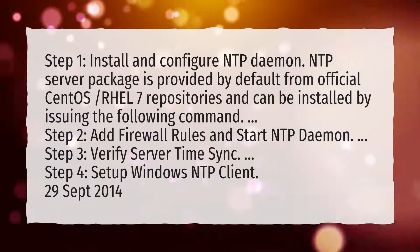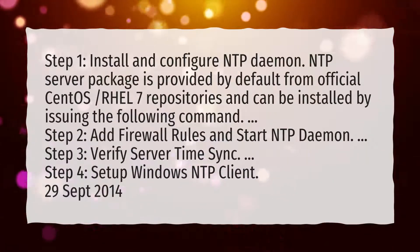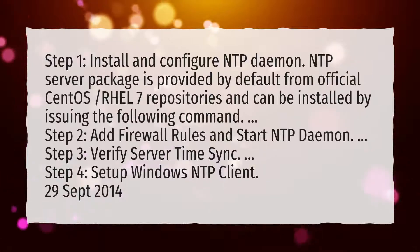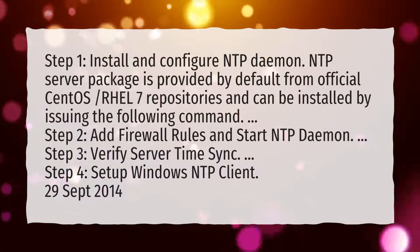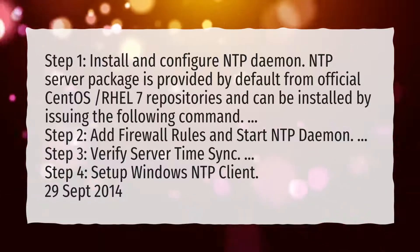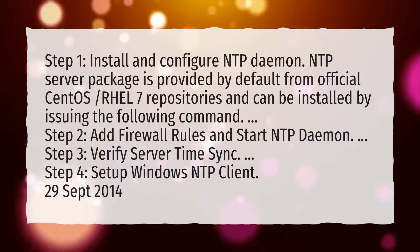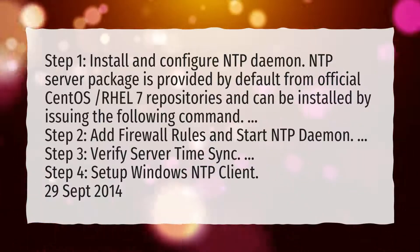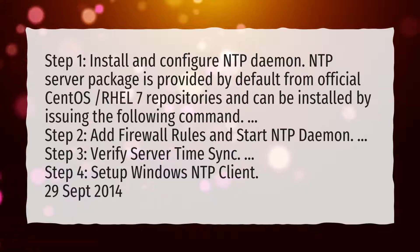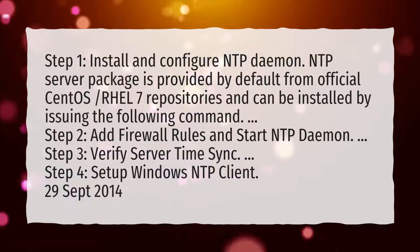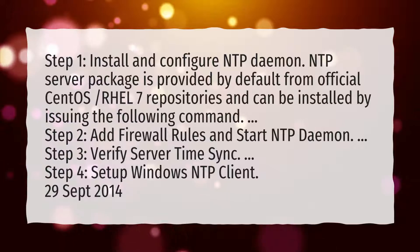Step 1: Install and Configure NTP daemon. The NTP server package is provided by default from official CentOS/RHEL 7 repositories and can be installed by issuing the following command. Step 2: Add Firewall Rules and Start NTP daemon. Step 3: Verify Server Time Sync. Step 4: Set Up Windows NTP Client.